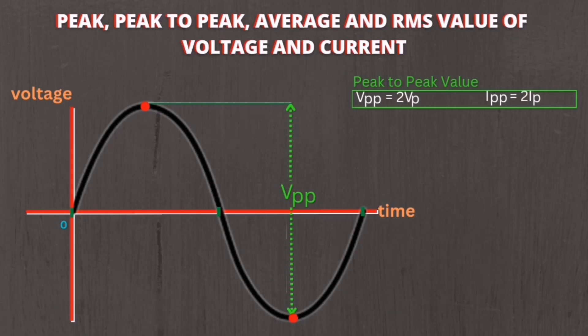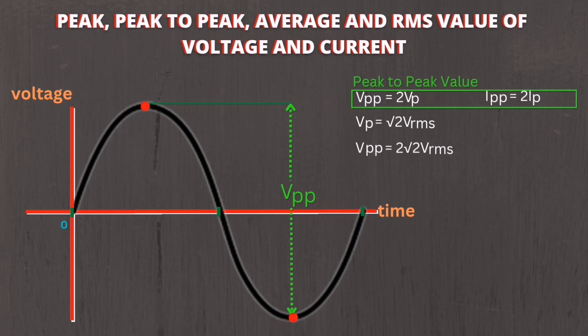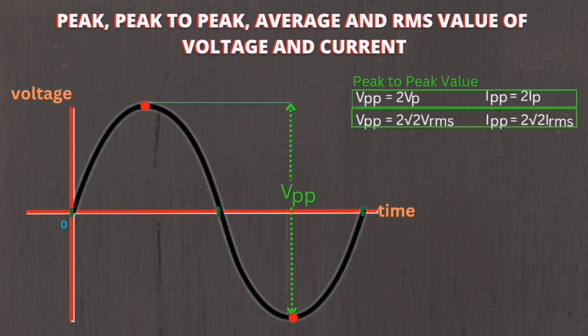If RMS is given, the formula for V peak-to-peak and I peak-to-peak will be derived as follows: since V peak-to-peak equals 2 times V-sub-P, and V-sub-P equals square root of 2 times V-RMS, then V peak-to-peak equals 2 times square root of 2 times V-RMS. Similarly, I peak-to-peak equals 2 times square root of 2 times I-RMS. So: V peak-to-peak equals 2V-sub-P or 2√2 × V-RMS, and I peak-to-peak equals 2I-sub-P or 2√2 × I-RMS.